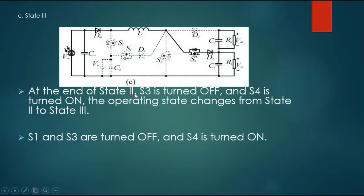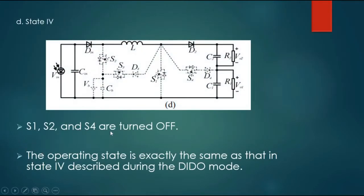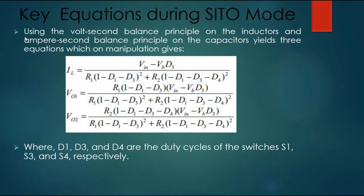State 3: At the end of State 2, S3 is turned off and S4 is turned on; the operating state changes from State 2 to State 3. S1 and S3 are turned off and S4 is turned on. State 4: S1, S2, and S4 are all turned off. The operating state is exactly the same as State 4 described during the DIDO mode.